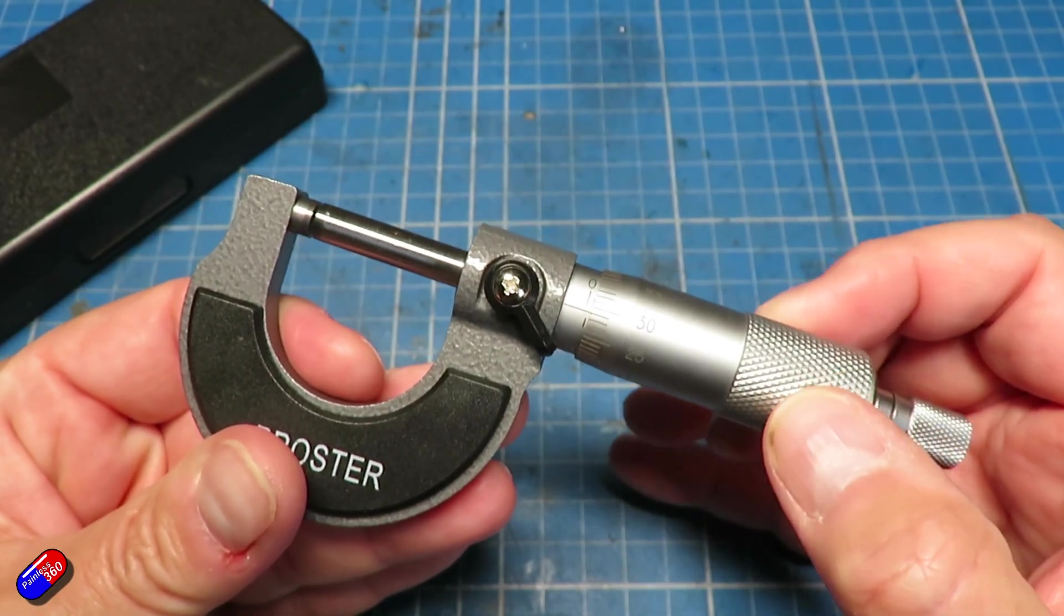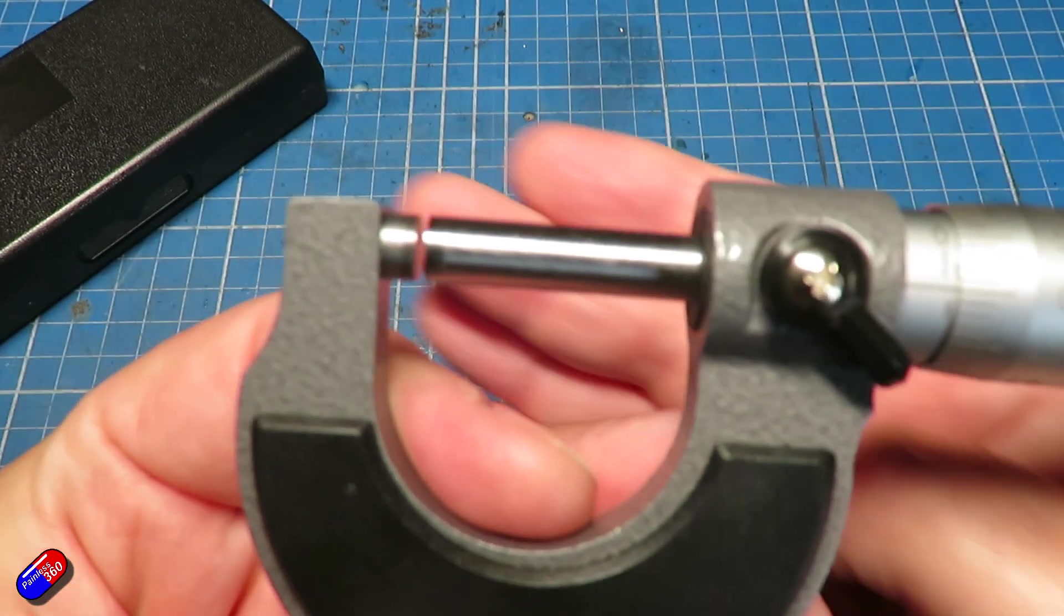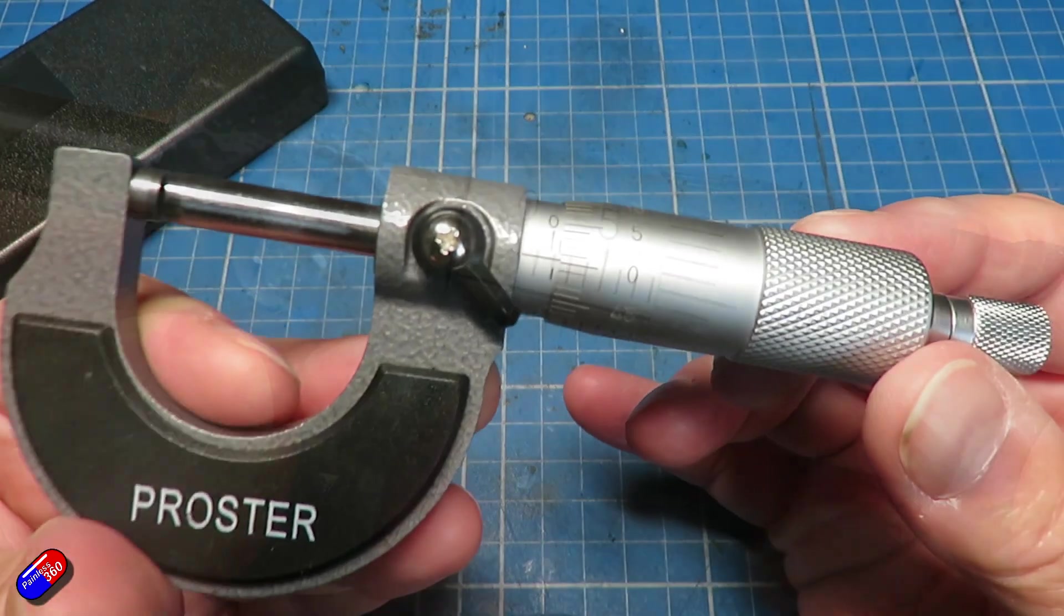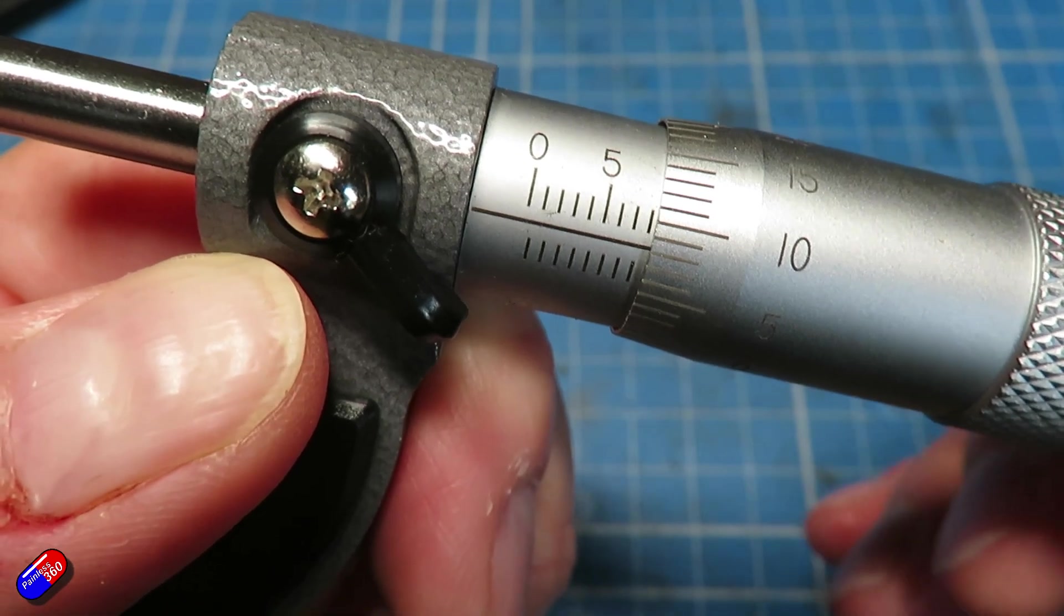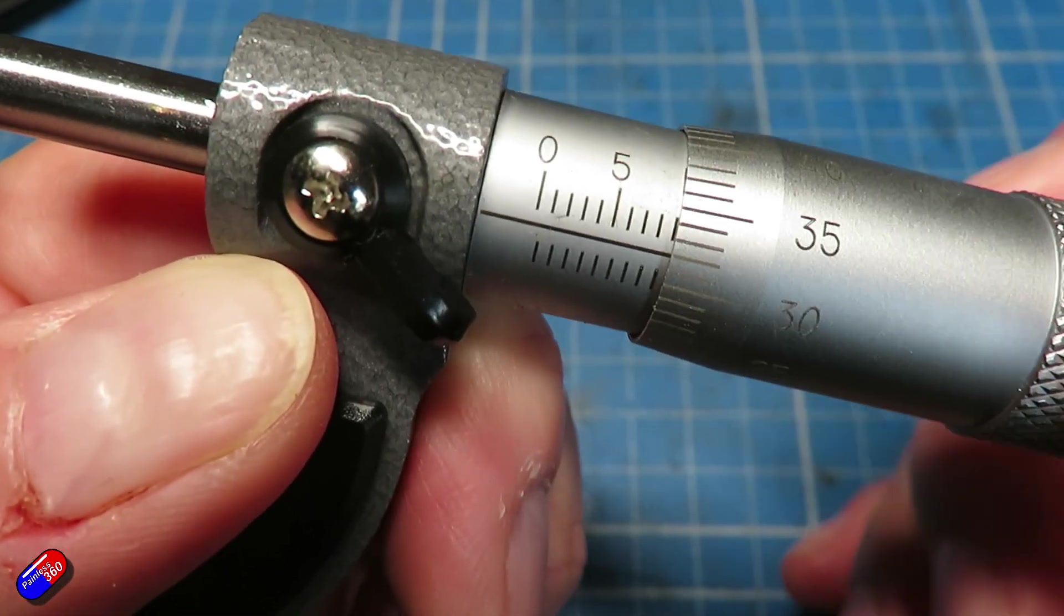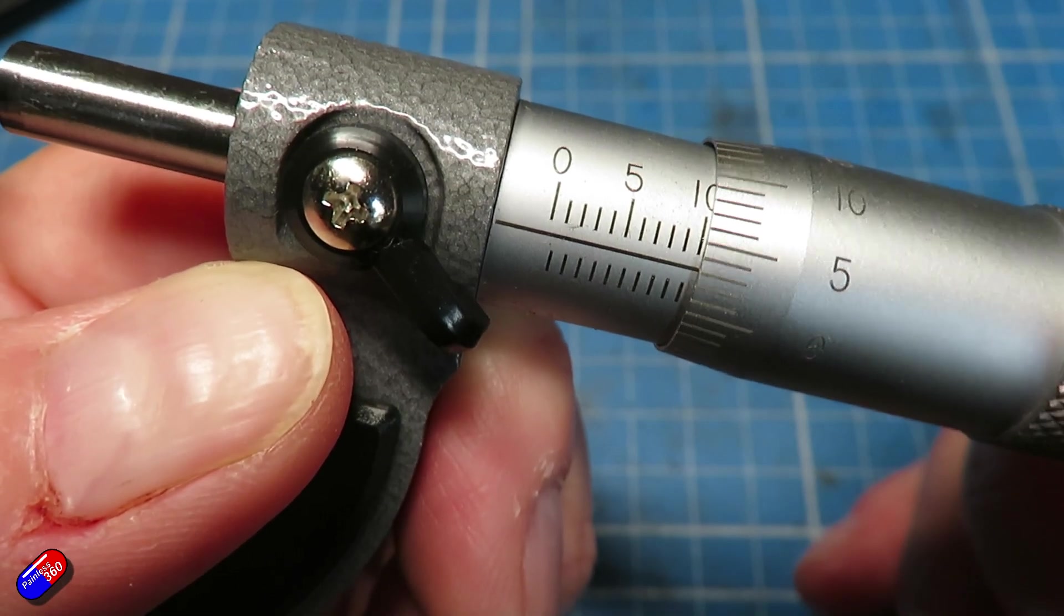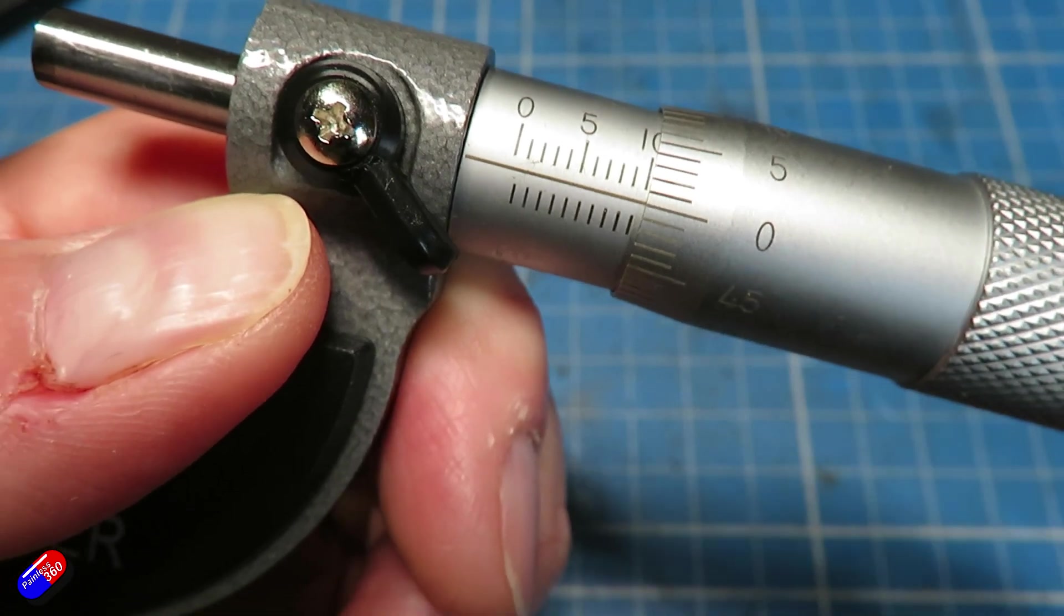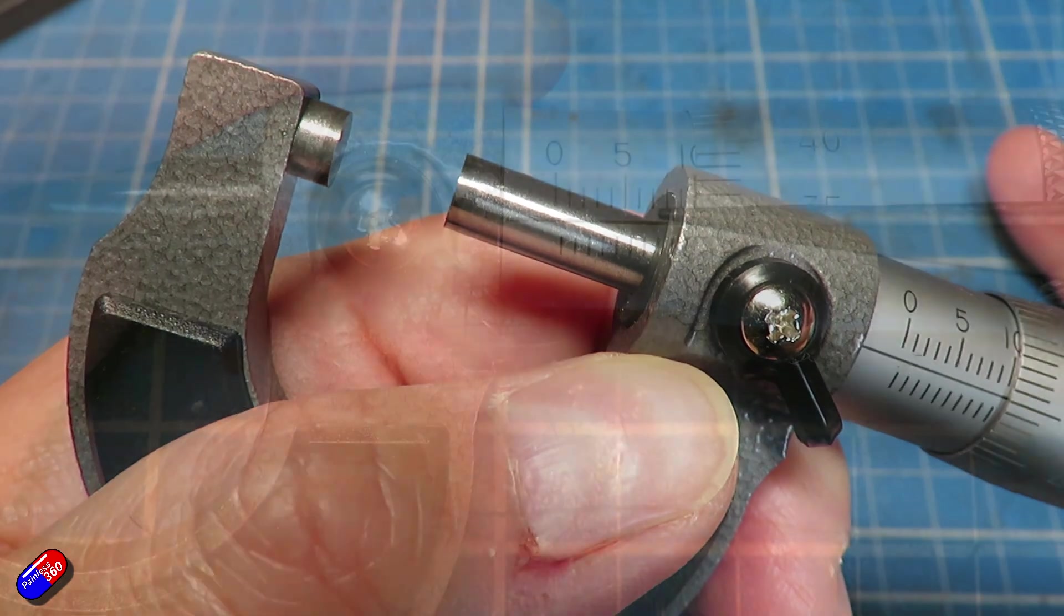One complete revolution brings the zero back - that gap is exactly one millimeter. This scale along the top is actually millimeters. As I roll it out, I'm getting further away. There's 10 millimeters - if I put zero on that line in the middle, that datum line, that is exactly a 10 millimeter gap.